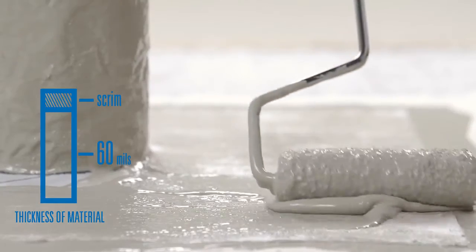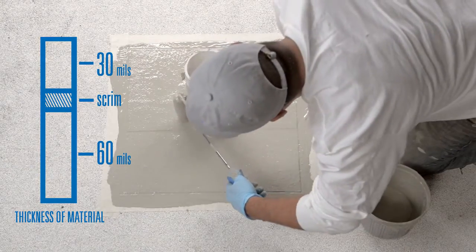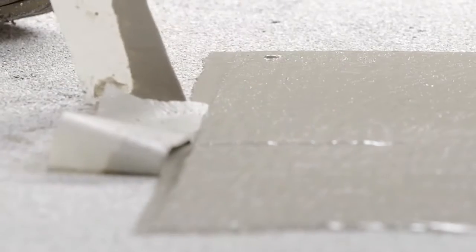Apply an even coat of resin on top of the scrim at about 30 mil thick. Use caution not to spread the resin too thin. Remove the masking and let it cure.